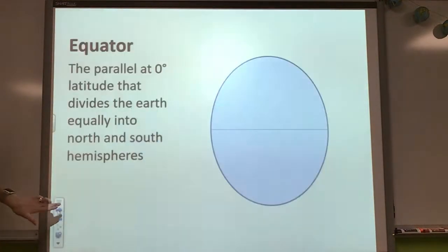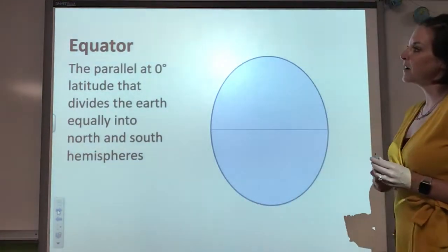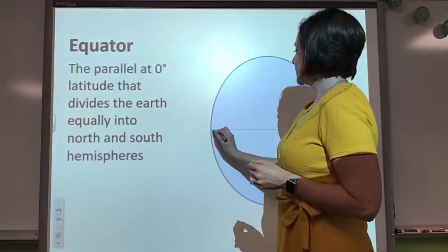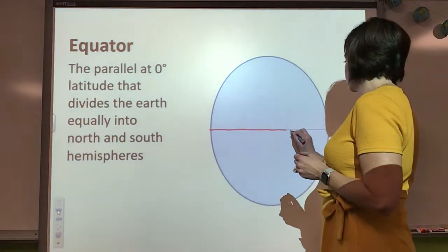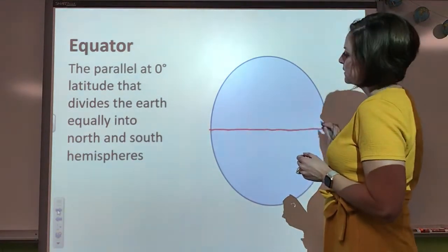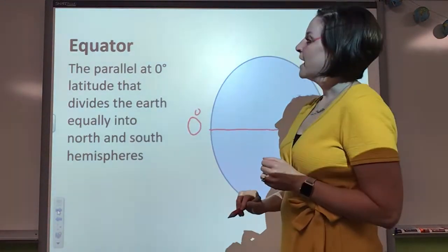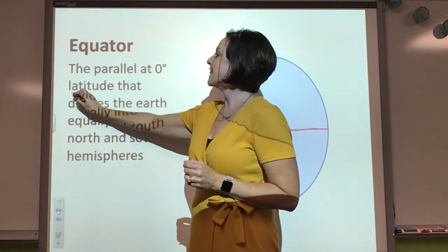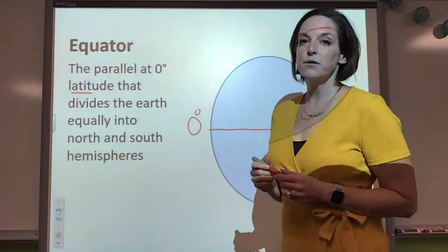So for our first one with the equator, equator goes right across. You could just draw a line straight across. Mine's totally not straight. What you need to know with the equator is that it's zero degrees. It's zero degrees latitude, which we'll be talking about in just a second here.